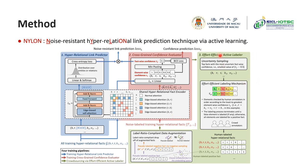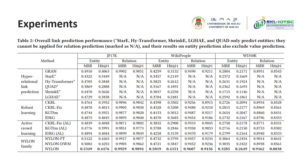Each iteration of the active labeler selects informative hyper-relational facts with uncertain sampling, and labels elements in ascending order of element-wise confidence until a negative element occurs, followed by a label-ratio component data augmentation for low-budget situations.